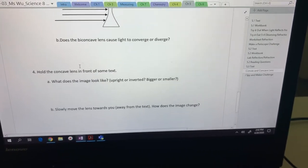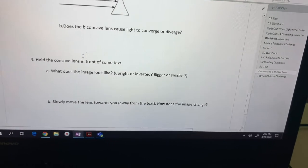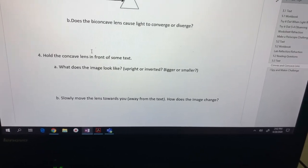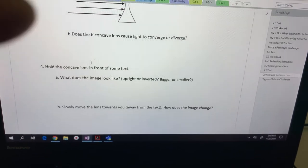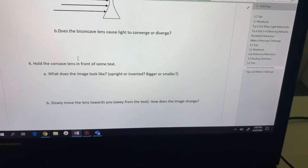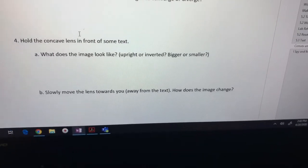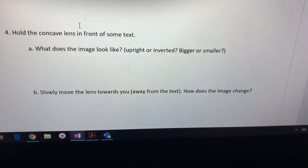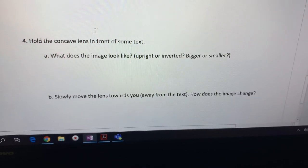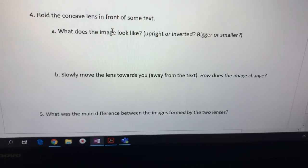And so to answer this part, the image is smaller and is still upright for what we're doing. Slowly move the lens towards you away from the text. How does the image change? Hmm. Blurry. Oh no, I'm not seeing a difference there. No, I don't think I'm seeing a difference here. No difference is how I'm going to answer that one.